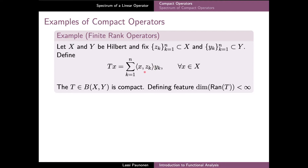We can note that for any x the image Tx is a linear combination of a finite set of vectors y_k, and therefore the range of T is finite dimensional. Because of this property, T is often called a finite rank operator, and conversely any Hilbert space operator with a finite dimensional range can be expressed in the form shown here.